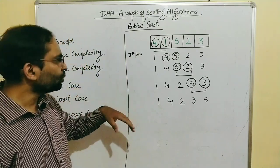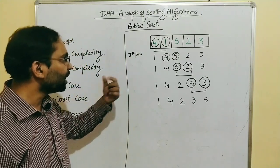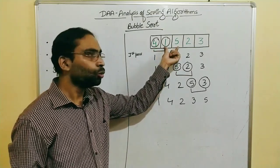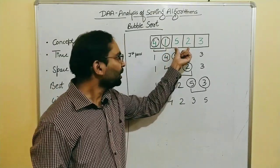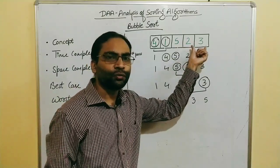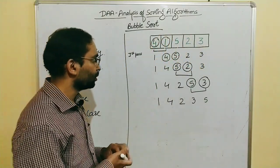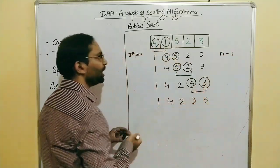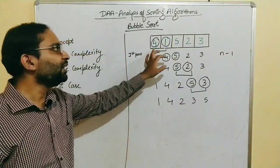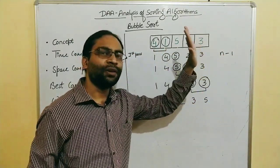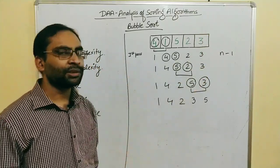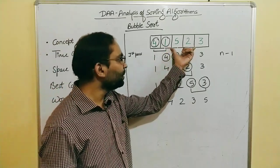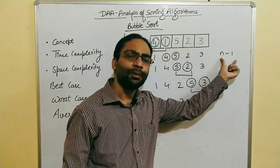In this first pass, we made 4 comparisons — comparing pairs at positions 1, 2, 3, and 4. That's n minus 1 comparisons, since we have 5 elements. For 5 elements we have 4 comparisons, for 10 elements we have 9 comparisons, and for n elements we have n minus 1 comparisons.